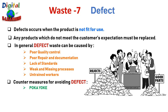Countermeasures for avoiding defects include implementing a PDCA cycle as a system, using Jidoka, identifying the root cause of a defect, and standardized work — creating work instructions that provide a consistent method of manufacturing a part.